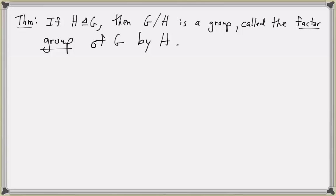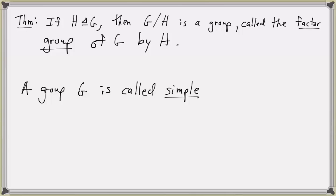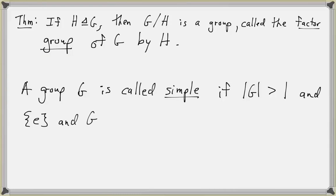One more definition: a group G is called simple if it has more than one element — so the order of G is greater than one — and the only normal subgroups of G are the trivial subgroups: the subgroup containing only the identity element E and the group G itself.